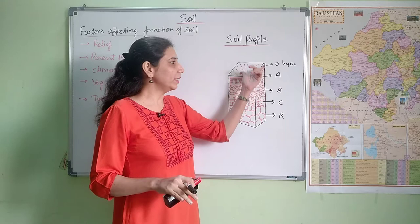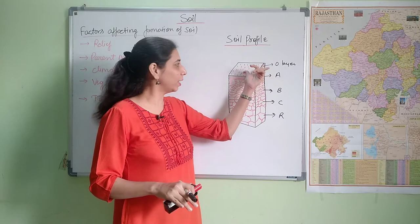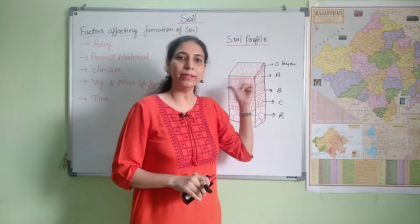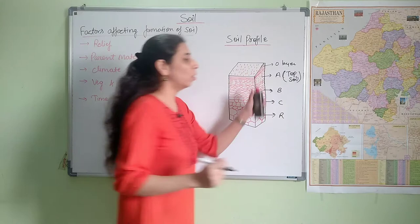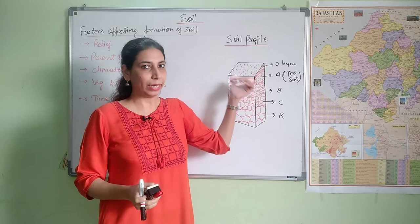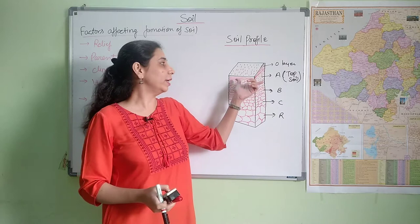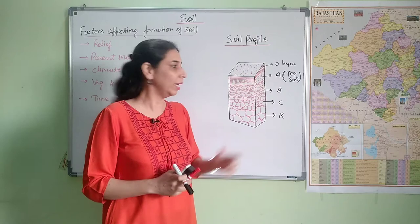After the O layer comes the A layer, which is the mineral-rich layer. There is humus here and this is also known as the topsoil. This is a very nutrient-rich layer and is very essential for plant survival. The A layer is very important for plant growth.